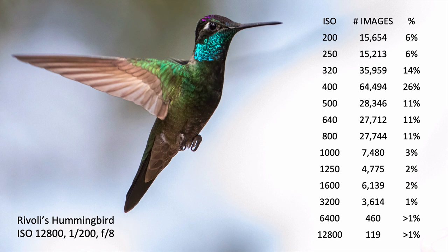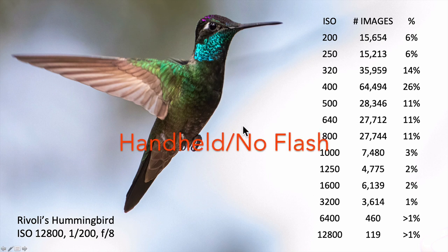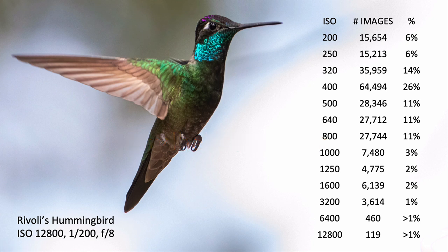I've only taken 119 photos at 12,800 ISO because most of the time I just don't shoot that high. But this hummingbird shot, which was handheld, was shot at 12,800 ISO, so you can see that it can work. All of the images I'm going to show you today I did not run through Topaz DeNoise — I did the regular Lightroom processing on them.